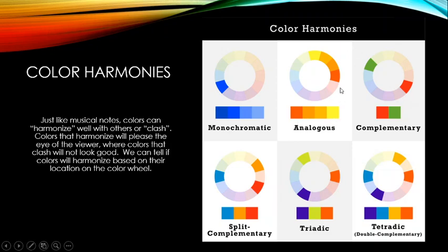An analogous color strategy groups colors that are next to each other on the color wheel — for example, a primary yellow and a secondary orange and the blends in between. You can have as many or as few colors as you like, so long as they sit adjacent on the wheel.